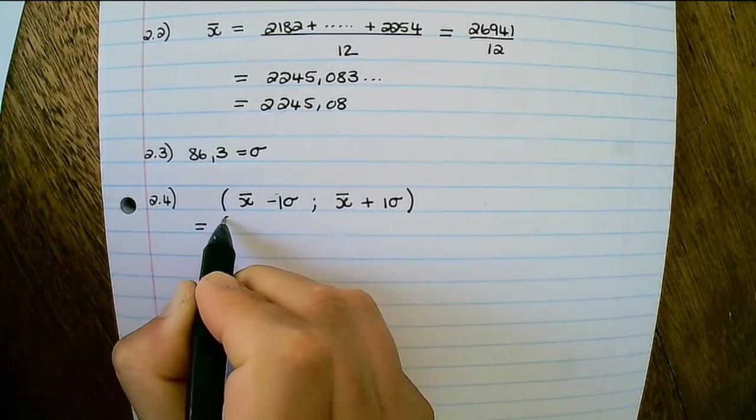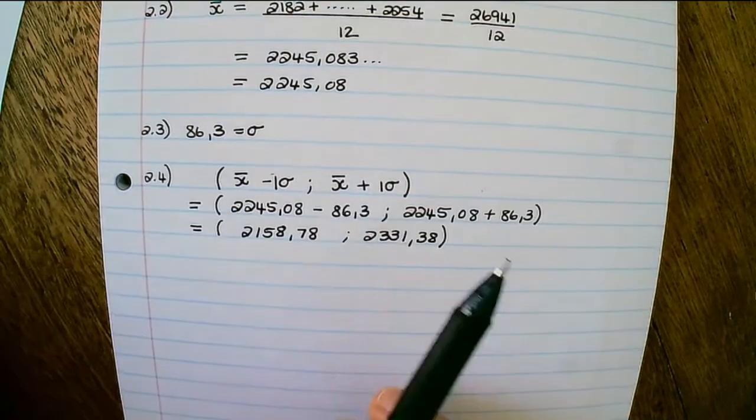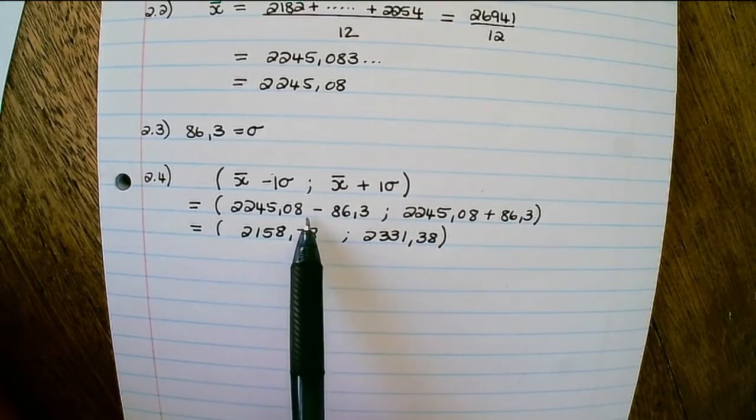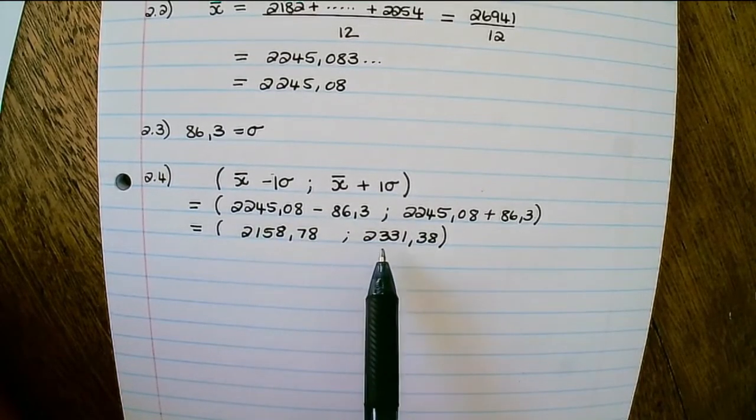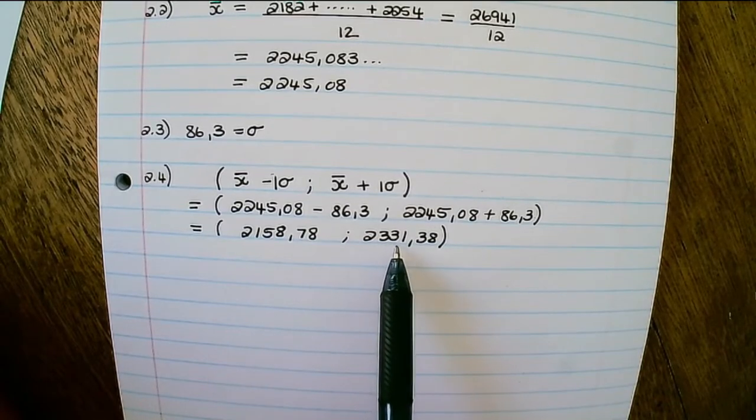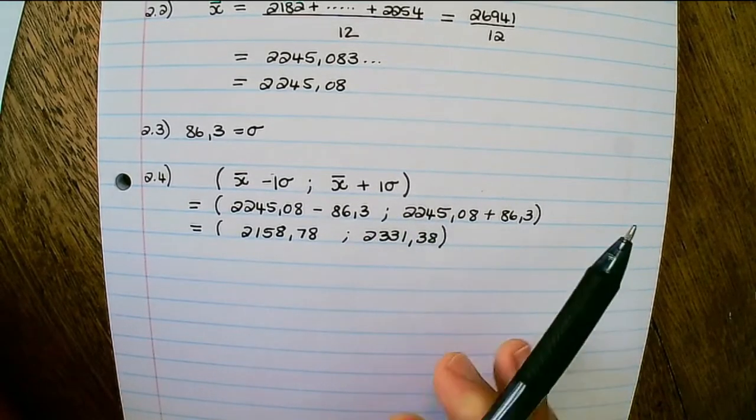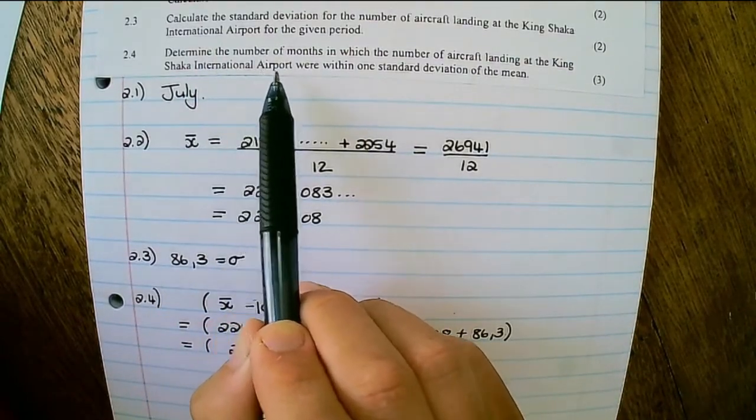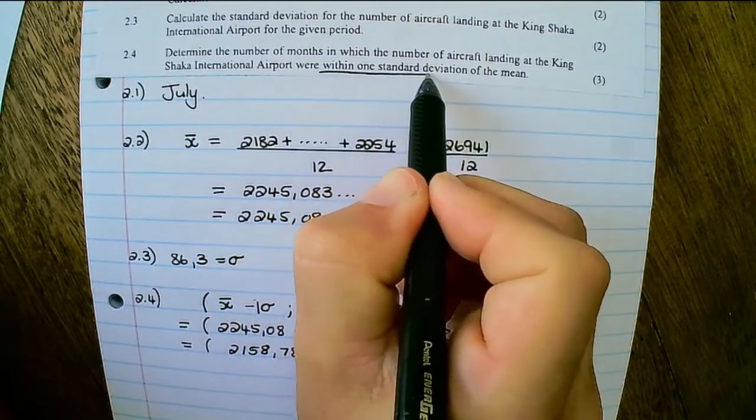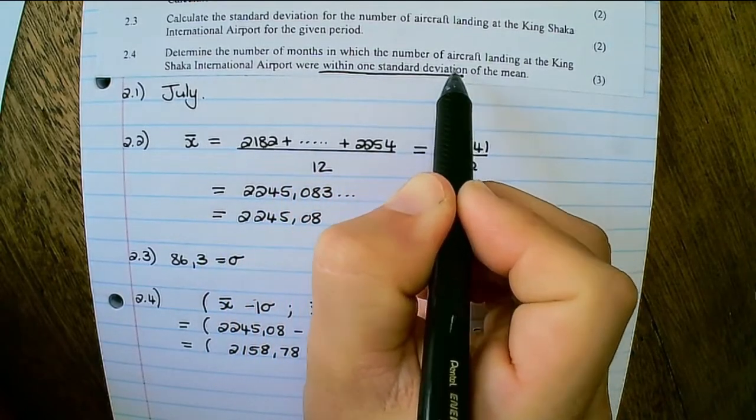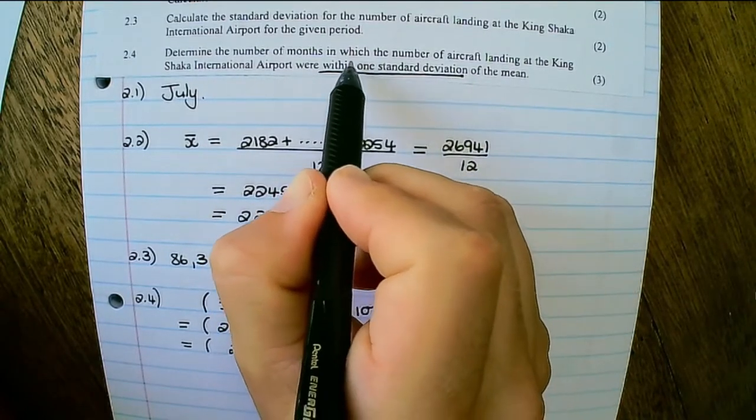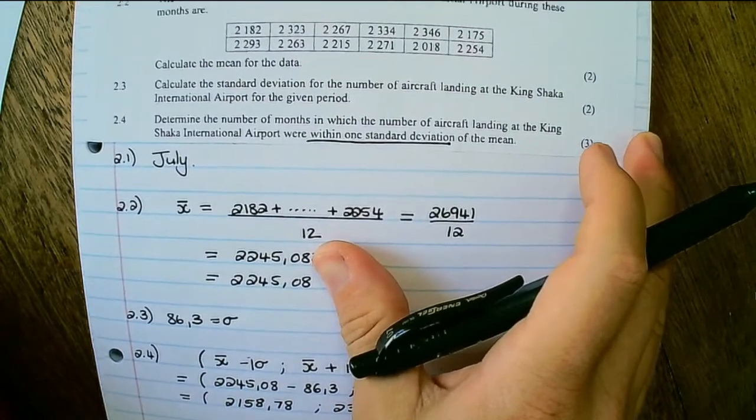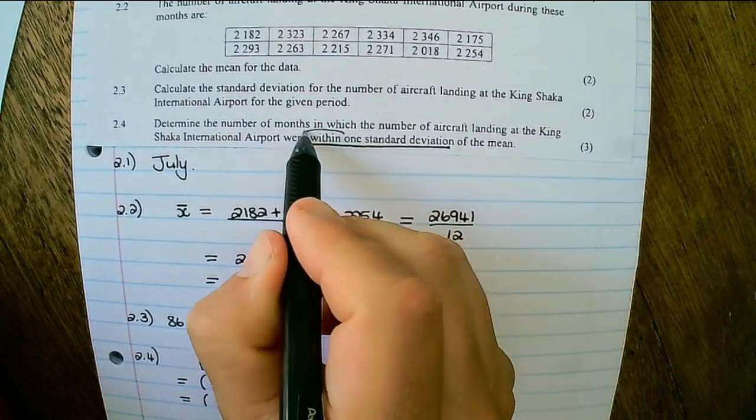Now I substitute the values which I have. The limits are 2,158.78, that's our lower limit, up until 2,331.38 as our upper level. Now we need to be careful. The question says how many fall within one standard deviation. Sometimes the question says out of one standard deviation. Now we look at the number of values within that range.